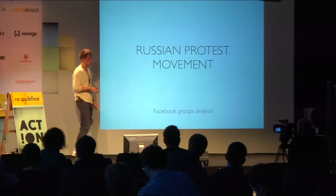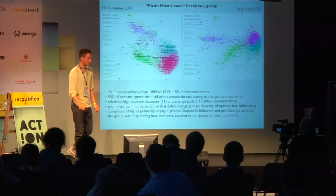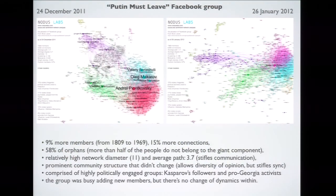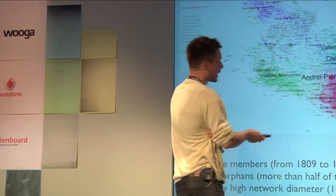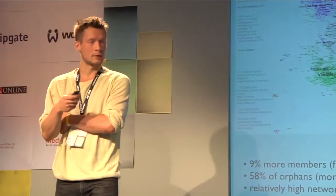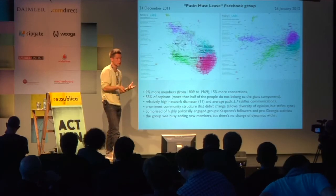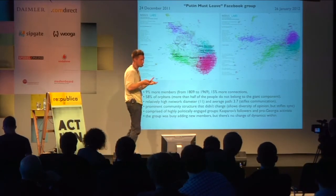I'll now go quickly through the Russian protest movement case study. We analyzed different Facebook groups established to organize the protests that happened in December and January in Moscow. One of the groups was 'Putin Must Leave.' We analyzed it once in December and once in January 2012 after a big demonstration in Moscow. We found that while the group was able to attract new members, the community structure inside the group didn't change. The communities were not very well connected together — more than half of the nodes didn't have any friends belonging to the same network. This made it very hard for this network to actually introduce any change, as it was not connected or open enough to the external challenges it faced.